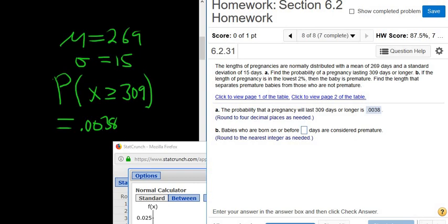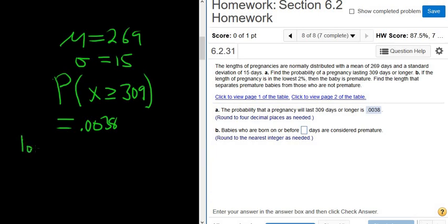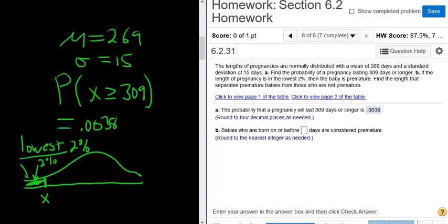So the key word here is lowest 2%. So we're looking for the cutoff value that separates the lowest 2% from everyone else. So lowest 2%, that's going to be over here. So this is 2%. And x here is the number of days. So because it's lowest, we shade to the left.